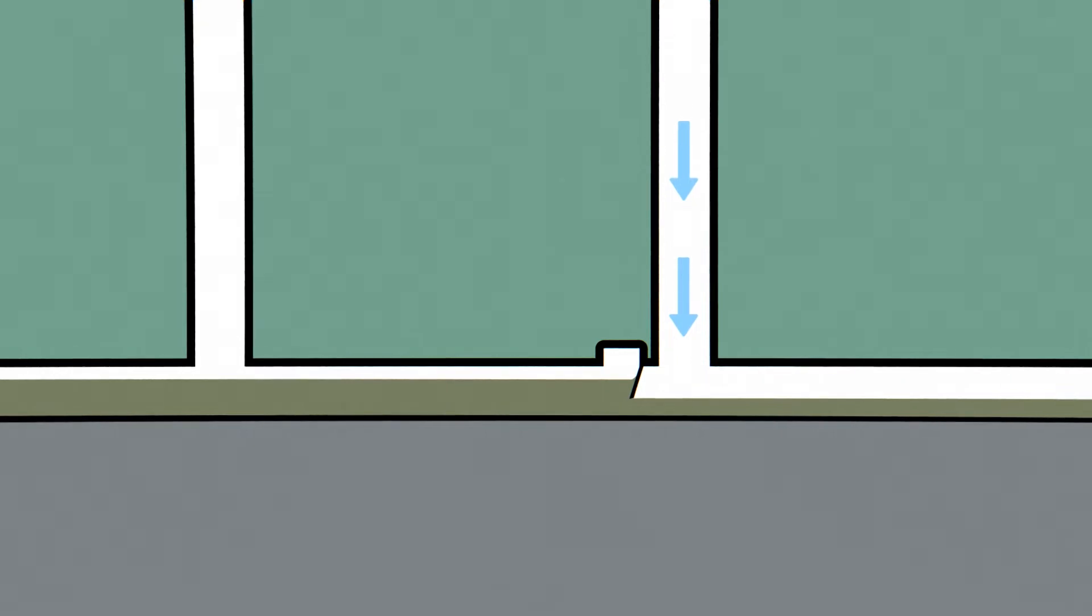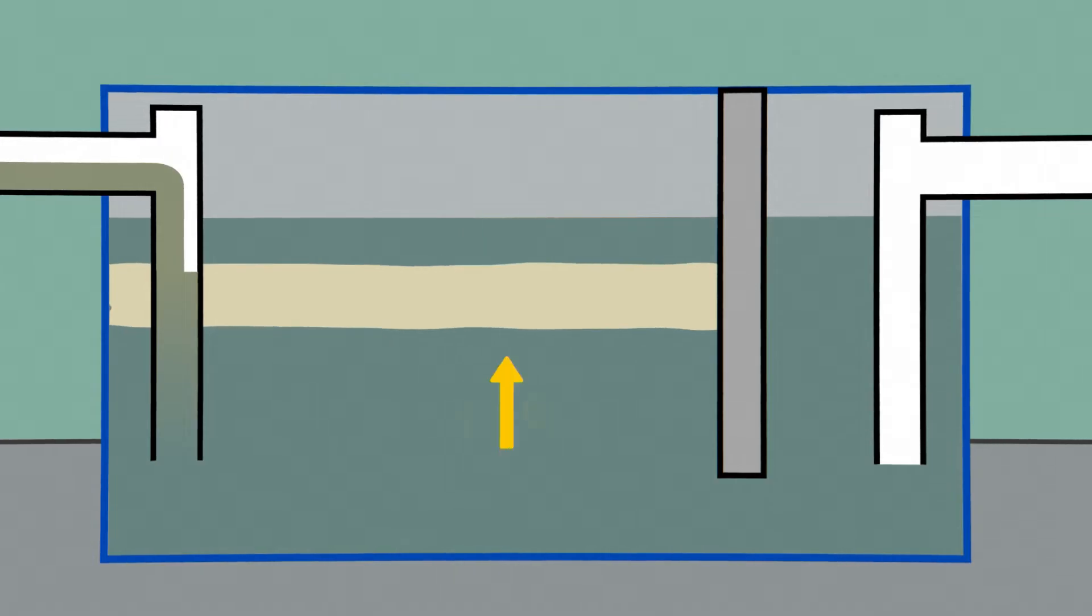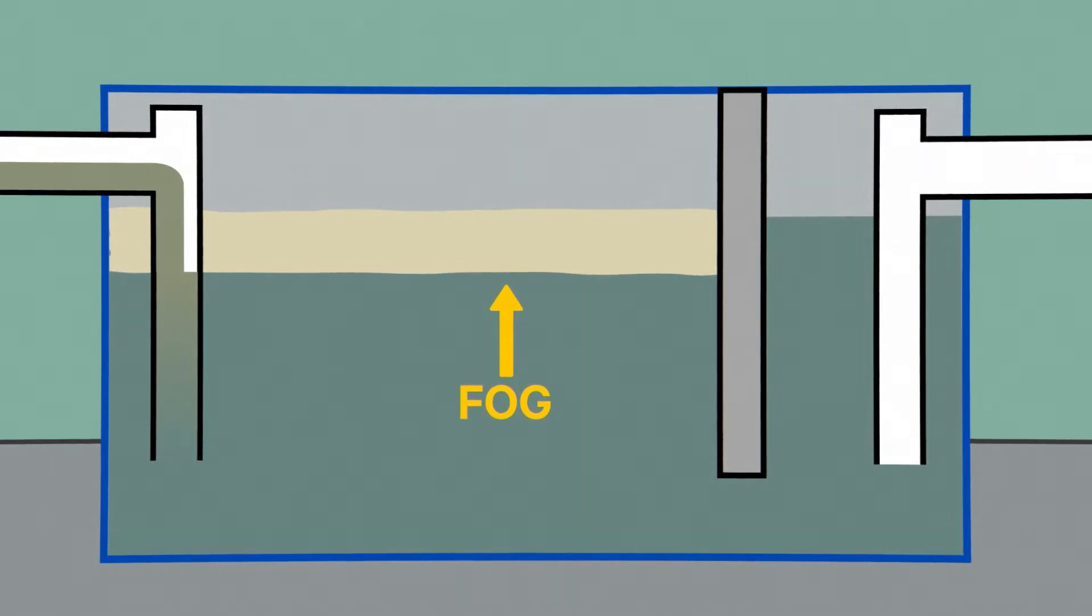An air intake valve helps relieve pressure that could build and prevent proper functioning. Fats, oils and grease, also known as FOG, floats on the surface of the water and accumulates behind grease retaining walls, known as baffles, while heavy solids fall to the bottom.